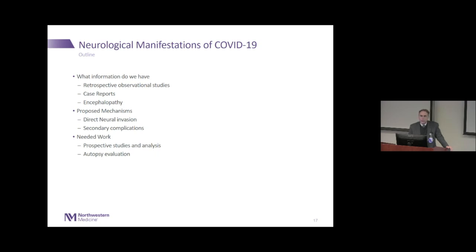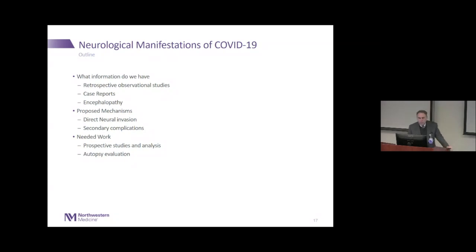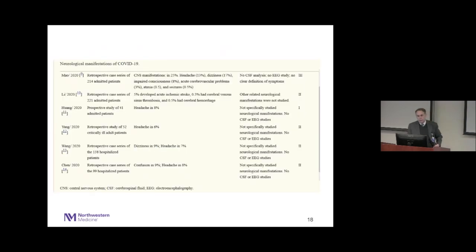Many patients who had just SARS had a similar presentation. We don't yet fully understand what this virus is doing neurologically. There are proposed mechanisms of neural invasion and secondary complications. We need prospective studies, analyses, and autopsy evaluations in these patients. The most quoted retrospective analysis published in JAMA Neurology came out of Wuhan, looking at patients treated at an outside hospital and then sent to the three COVID hospitals in Wuhan, China.